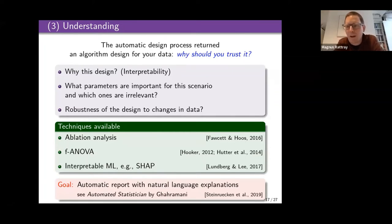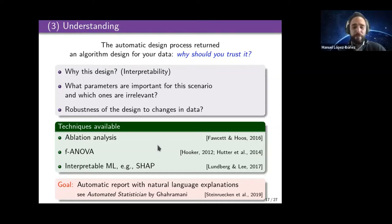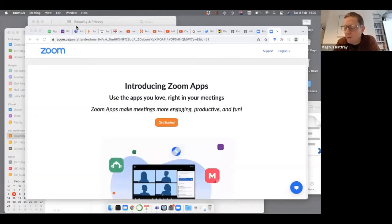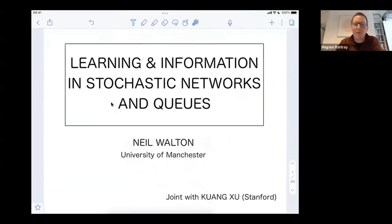I think we've run out of time. There was a question from Marcel which I'll forward on to Manuel. Our next speaker is Neil Walton, and Neil is going to talk about learning and information in stochastic networks and queues. Over to you, Neil.